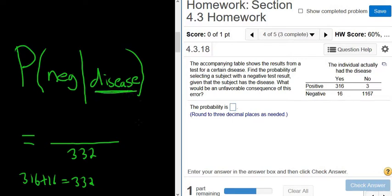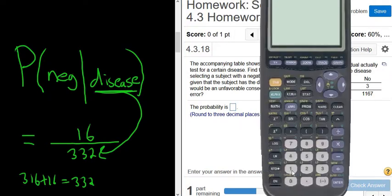This always tells you the number on the bottom, right? The people that have the disease. So we just add up all the yeses. From these, we're looking for the negatives, so only 16. So 16 out of 332.